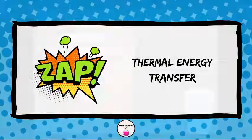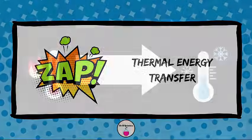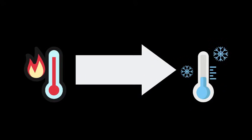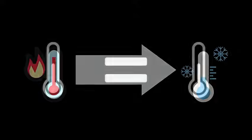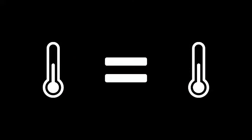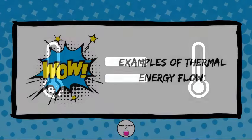Thermal energy transfer. Thermal energy naturally flows from warmer to cooler objects. This flow occurs until thermal equilibrium is reached, where both objects have the same temperature, and no further net heat transfer occurs.